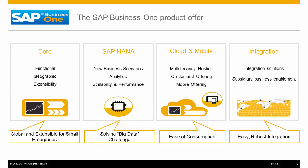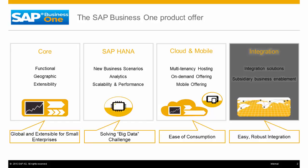SAP Business One's product offering covers four areas, starting with the SAP Business One ERP core functionalities. With SAP Business One running on the SAP HANA in-memory database platform, functions such as analytics and high performance scalability are introduced. SAP Business One can be an on-premise installed solution or can be implemented as a cloud-based solution, both of which offer mobile integration to key stakeholders, showing key information within SAP Business One anywhere you have a mobile device.